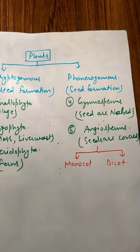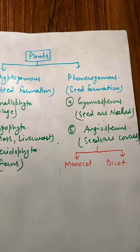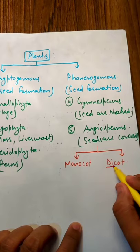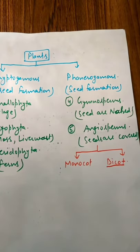जो covered seed है इनको further divide किया गया है कि इनके अंदर cotyledon कितने हैं। जैसे जो maize होता है, chana होता है, उसका cover उतारोगे तो आपको two coats मिल जाएंगे। लेकिन wheat और rice में ऐसा नहीं होता। Wheat and rice covered seed के साथ होते हैं — angiosperm में आएंगे but those are monocot। और जो maize है, chana है उसको हम dicot बोलेंगे। So angiosperm is further divided into two different classes: monocotyledon or monocot, and dicotyledon or dicot.